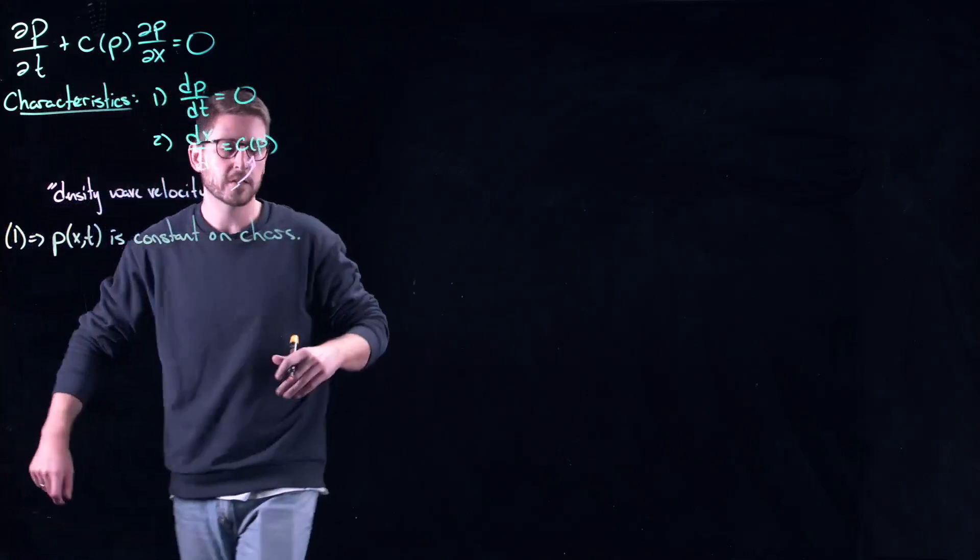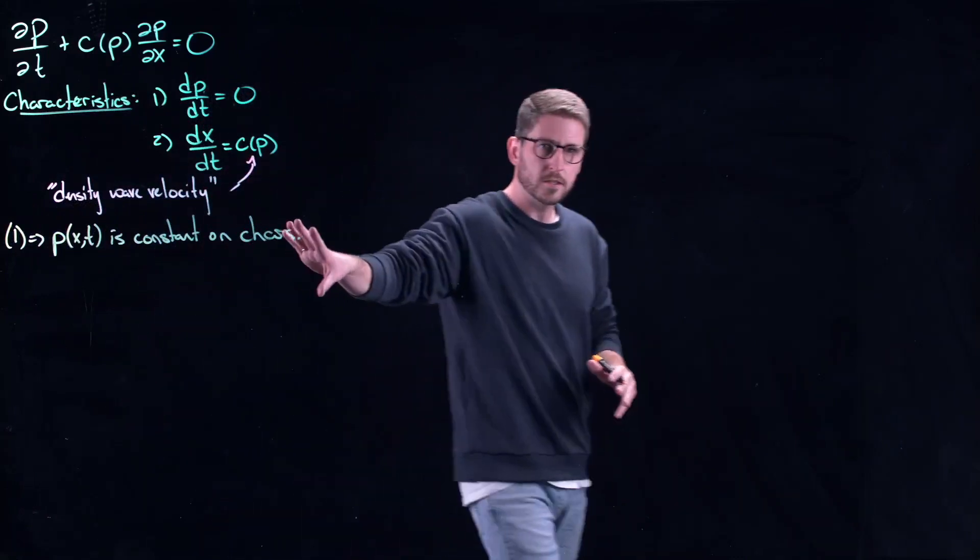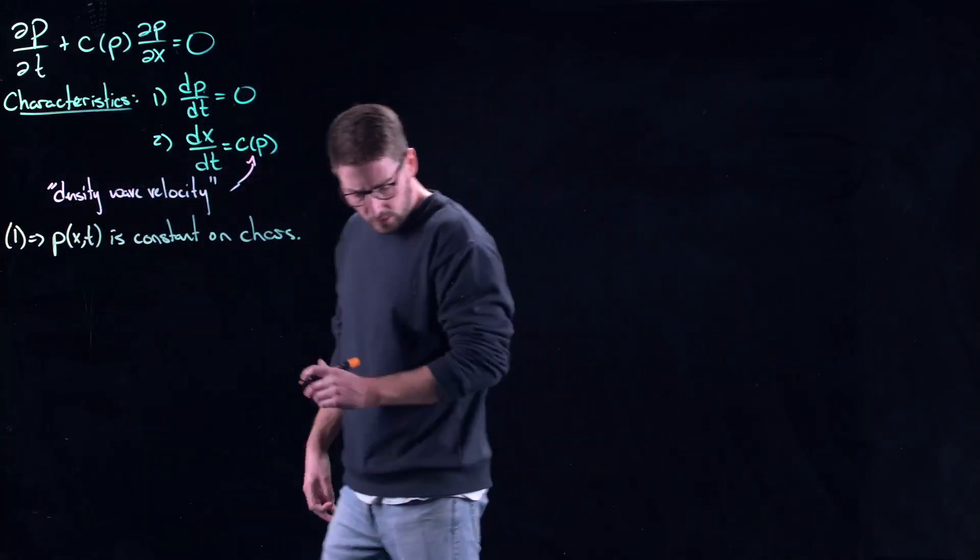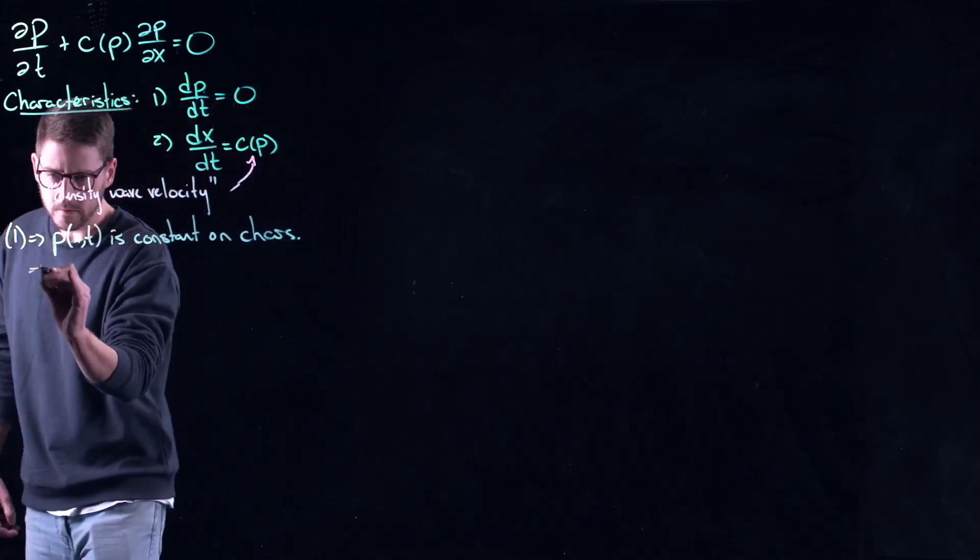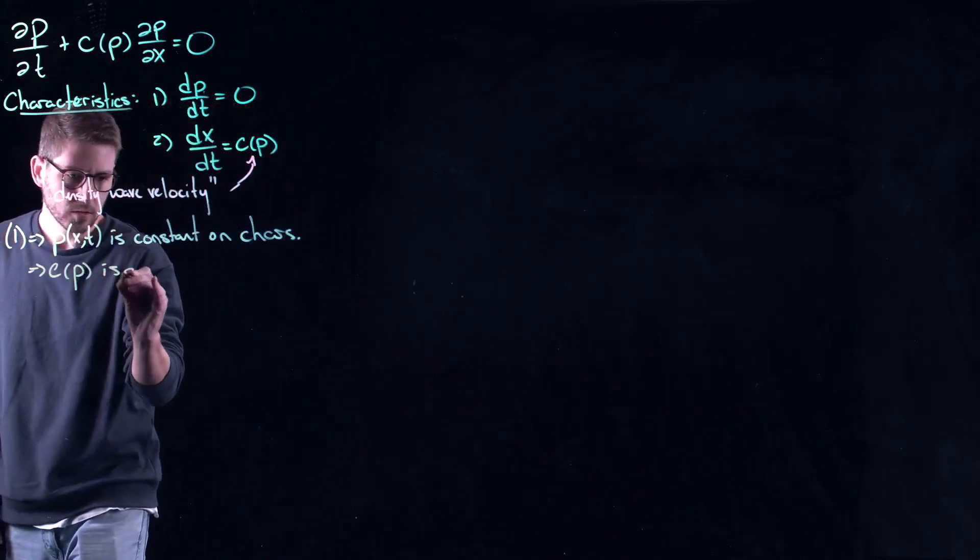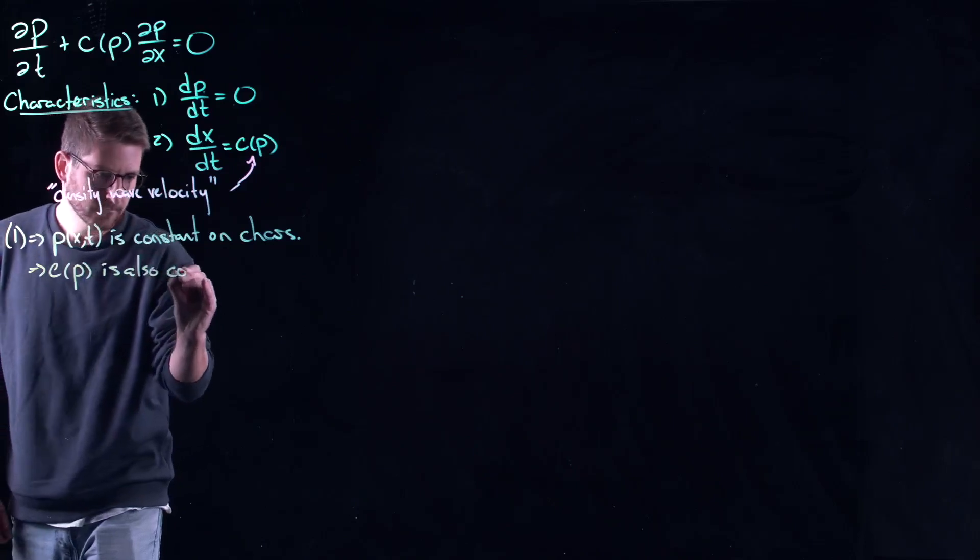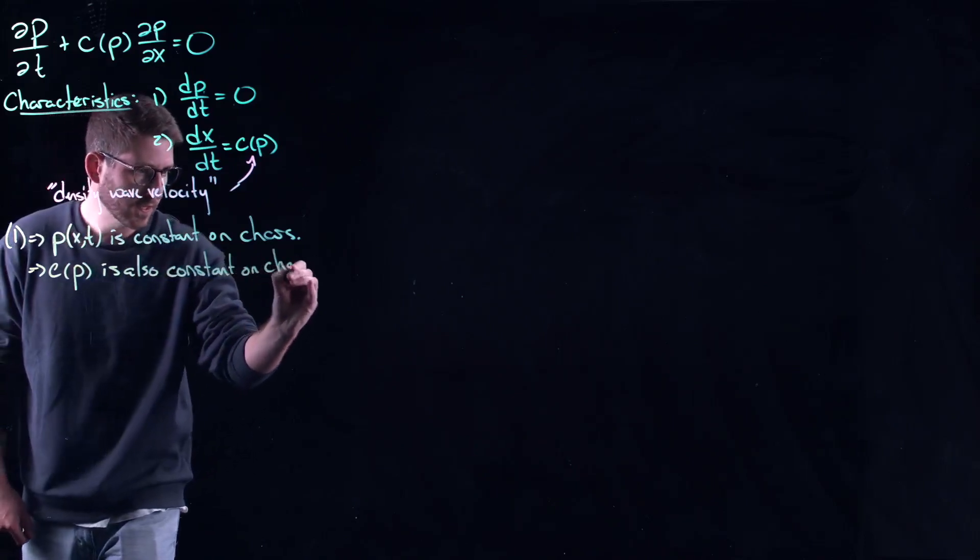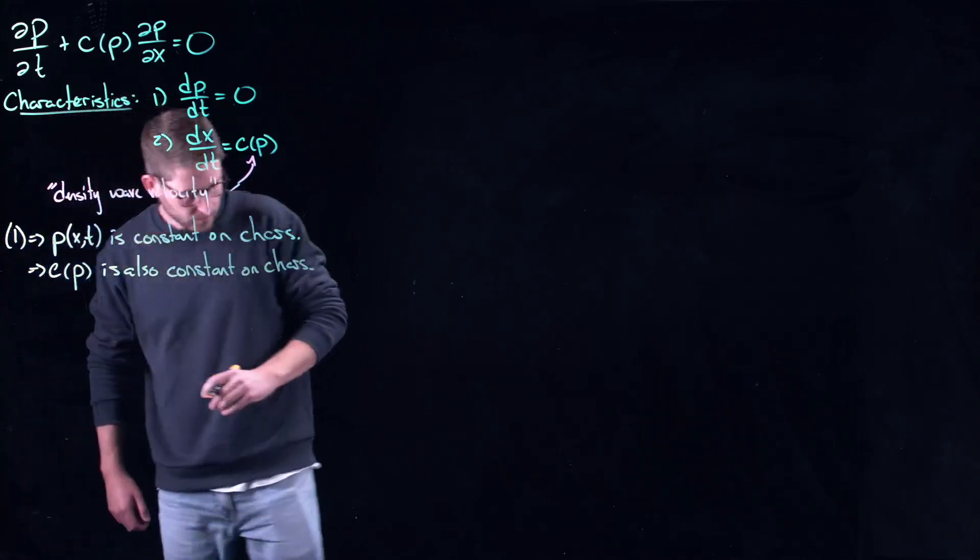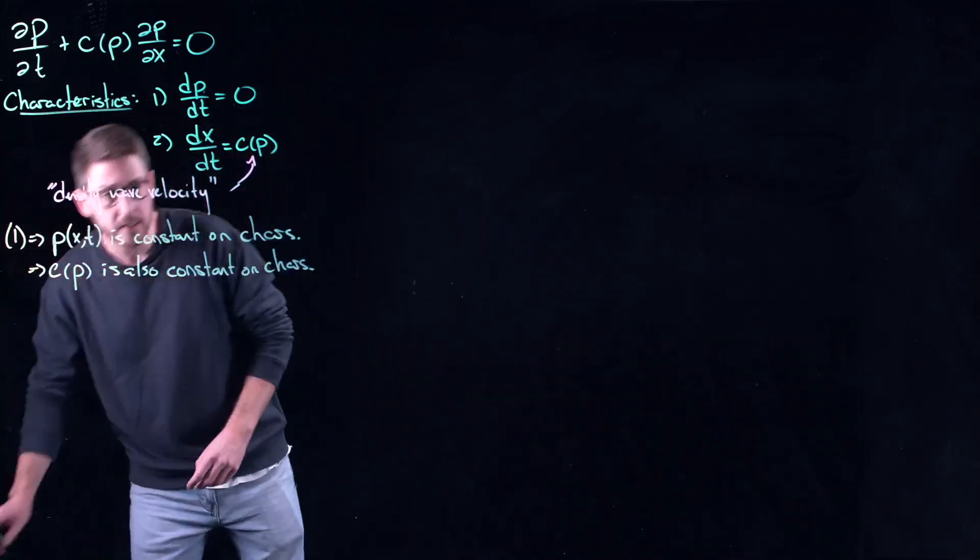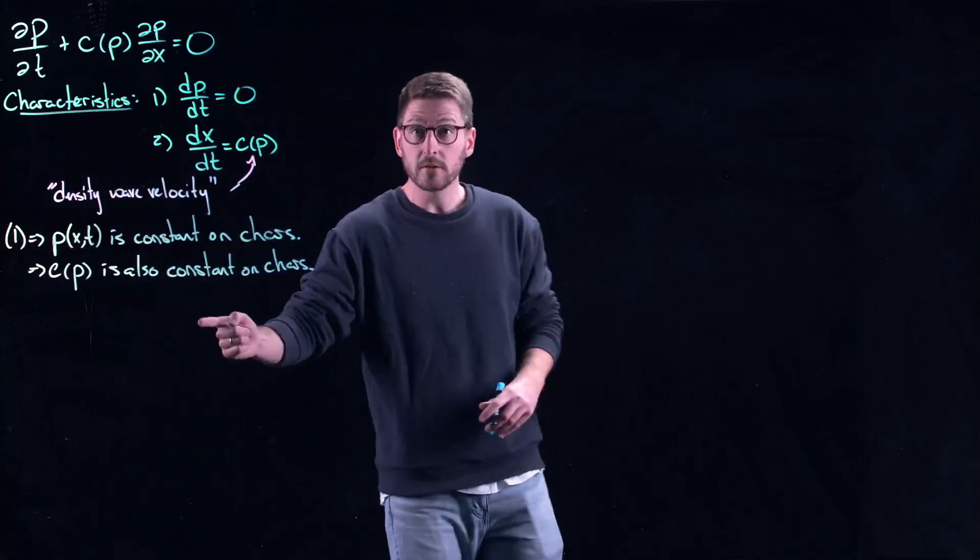Characteristics, just so that I don't have to screw up spelling characteristics for you again. Essentially this tells me that my speed is also constant on the characteristics. So the question is what is the speed associated to each characteristic?